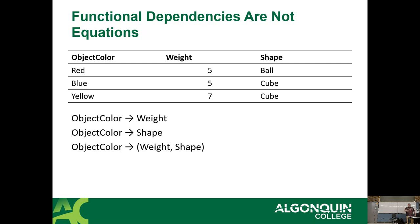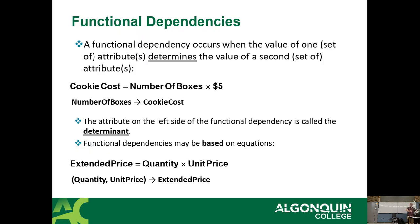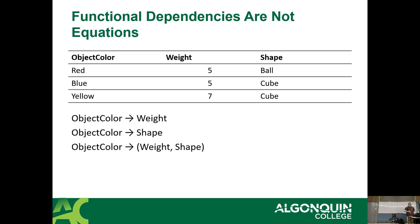For example, the number of boxes determines the cost of the cookies: 7 boxes times $5 equals $35 — the $35 is determined by the number of boxes. The attribute on the left side of the functional dependency is called the determinant. A dependency can be based on equations: extended price equals quantity times unit price, written in relational syntax as (quantity, unit) → extended price. Everything in the parentheses on the left is a determinant — it determines the value of anything after the arrow. A single attribute on the left determines a set of attributes on the right, or vice versa.